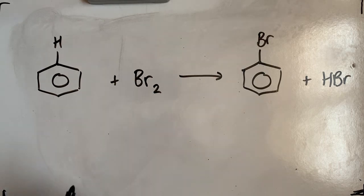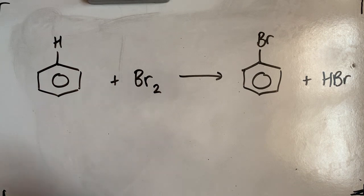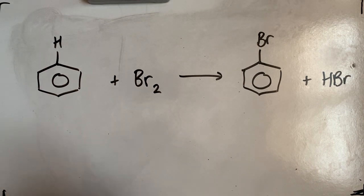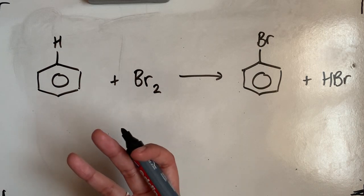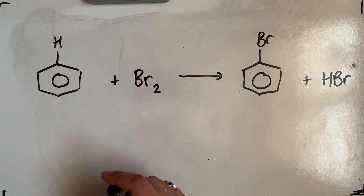Now in this reaction, because you might have seen that benzene is quite unreactive, all the reactions of benzene require a catalyst. So in the nitration reaction, we had to have concentrated sulfuric acid. In this one, we have to have something called a halogen carrier.